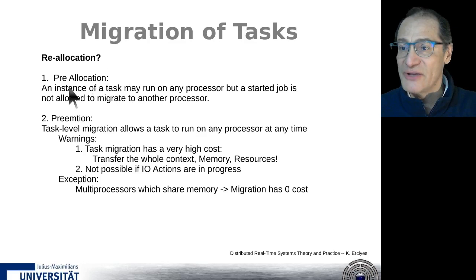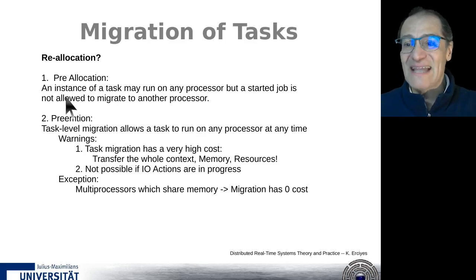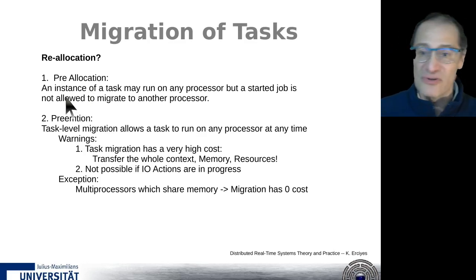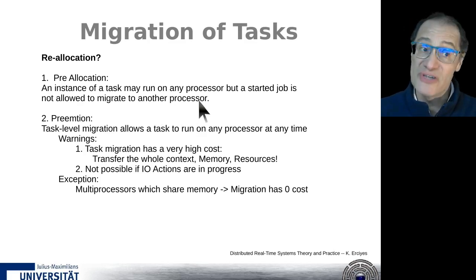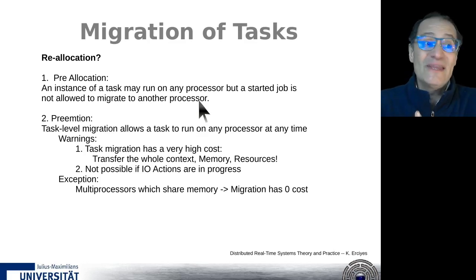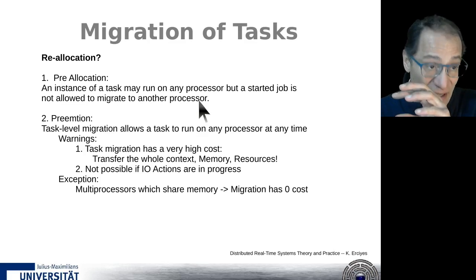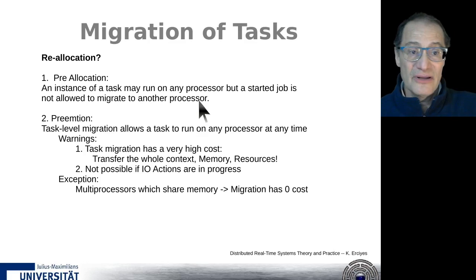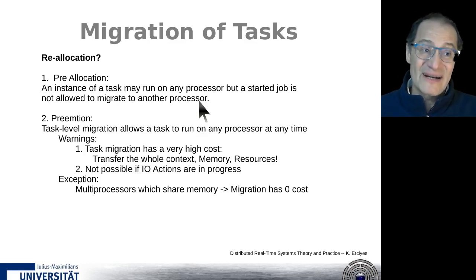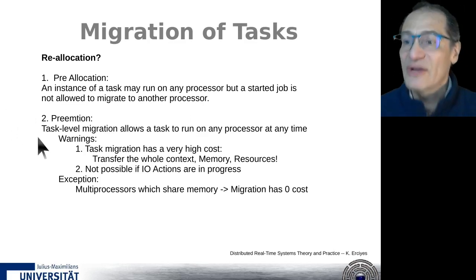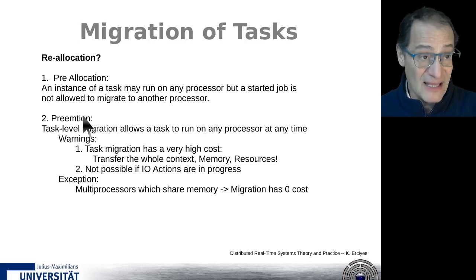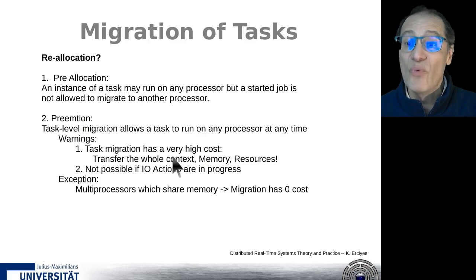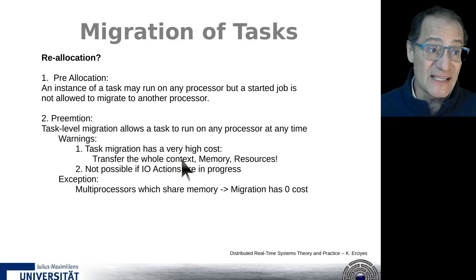Migration with reallocation: a pre-allocation means we have an instance of a task which might run on many processors, but once started, the job is not allowed to migrate. We can migrate only applications not currently running. So we have an initial distribution, and in runtime we decide we have a better distribution - before starting one application, we move it to another node. This is called task-level migration, which allows a task to run on any processor at any time. Warning: task migration has a very high cost when preemption is involved, because we must transfer the whole context, all memory, all registers, all variables.